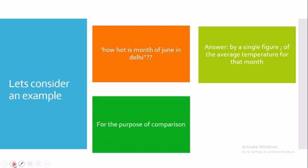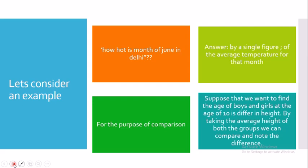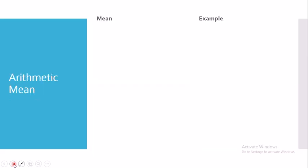These measures are also used for comparison. Suppose we have two groups of students — boys and girls — at age 10, and we want to study their heights. By taking the average height of both groups, we can compare whether there is any difference and understand why that difference exists.